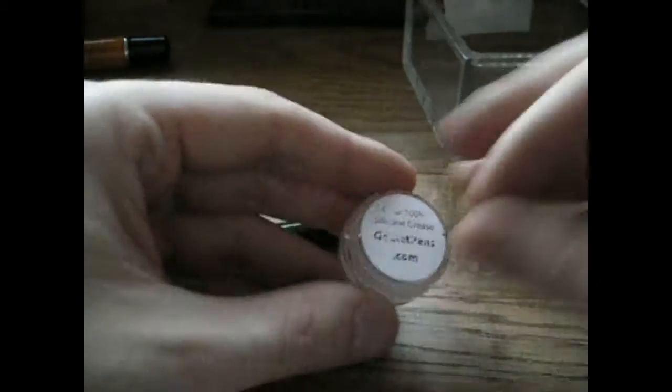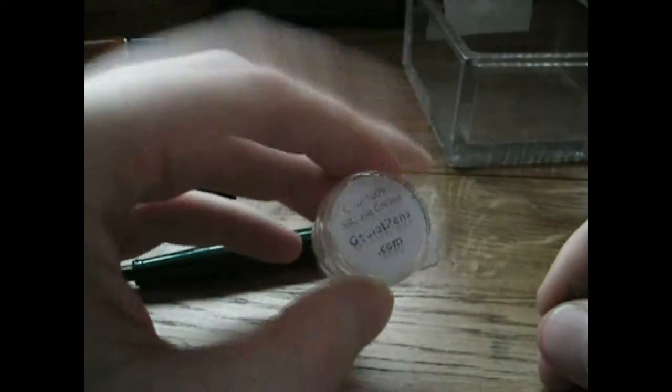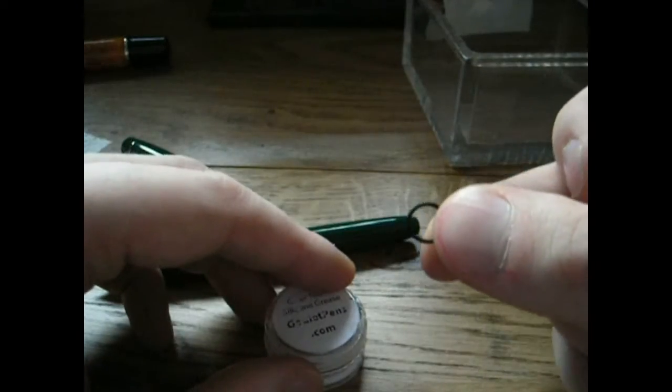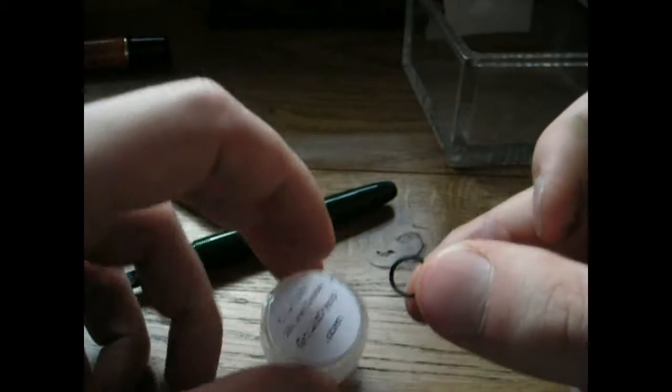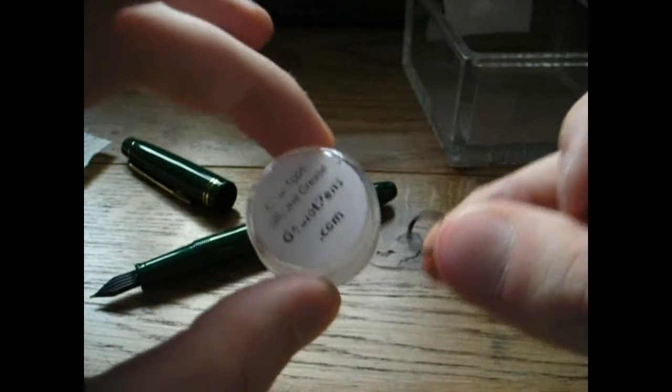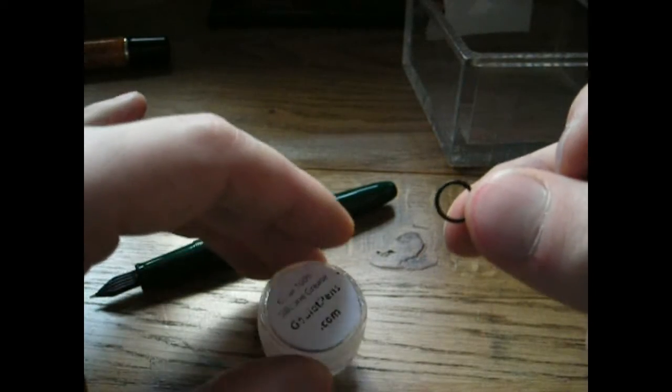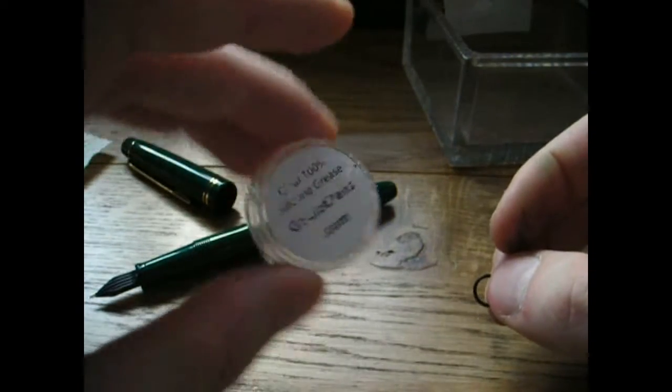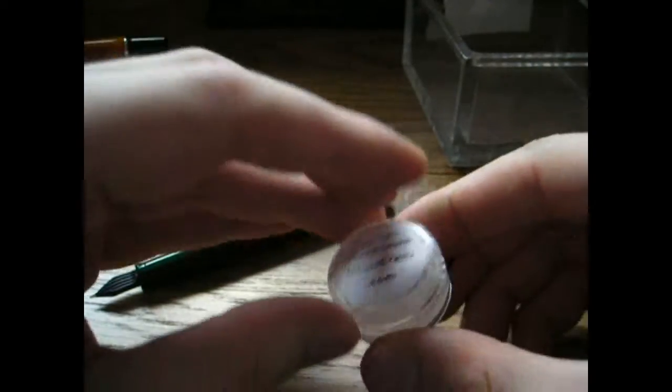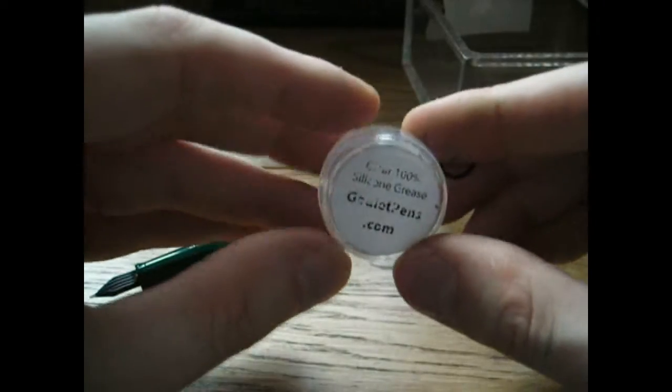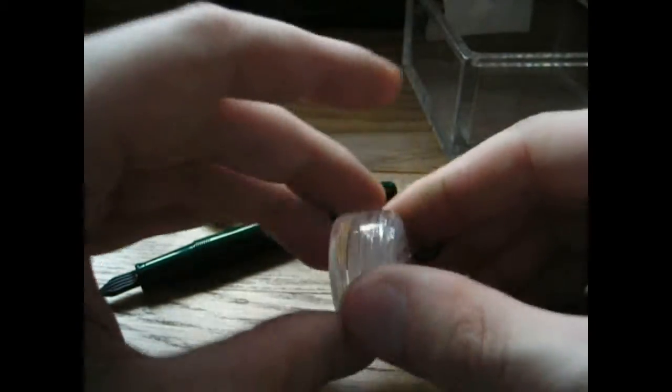You're going to need some silicon grease. This is from the Goulet Pen Company. I'm not affiliated with them, but this is good stuff, and it's pretty cheap. And in this case, I would recommend using a rubber O-ring, which you can also buy from the Goulet Pen Company. This together is less than five dollars. And this will last a long time. If you're halfway serious about fountain pens, get this. You can use it in a lot of different ways.